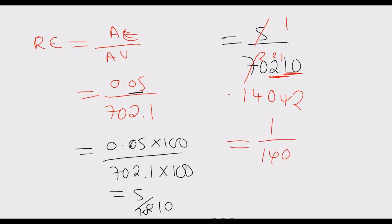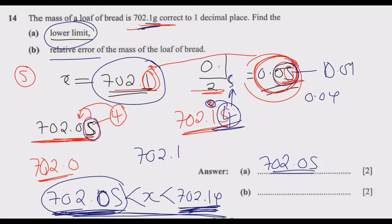We end up with 1 over 14,042. So 1/14,042 is our answer. This is how you answer this question. I took time to answer because I want you to understand the concept.